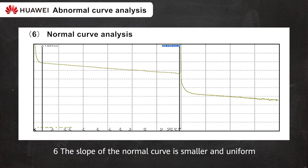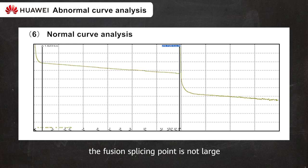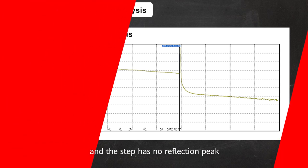6. The slope of the normal curve is smaller and uniform. The curve is straight, no abnormality exists, the splicing point is not large, and the step has no reflection peak.